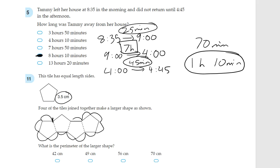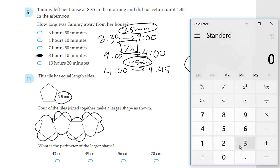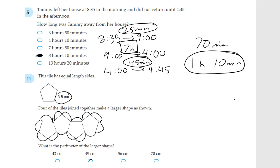10, 11, 12, 13, 14. 14 sides all together, and each one is 3.5. So let's use the calculator. 3.5 times 14 equals 49. The answer is this one, 49 centimetres.